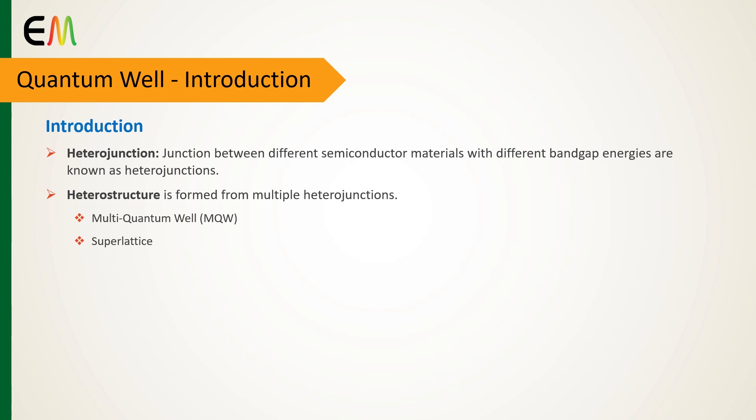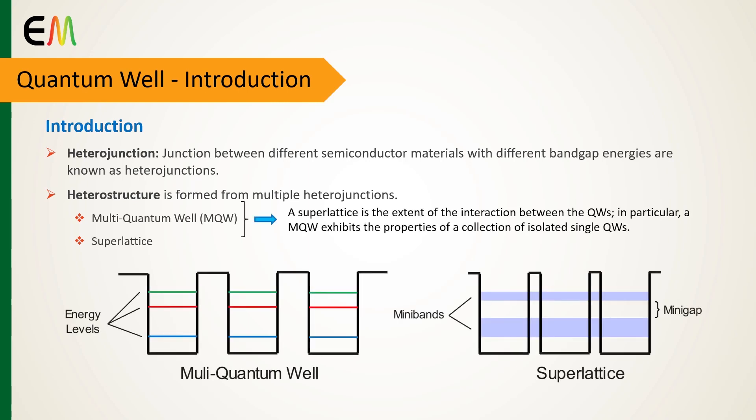A superlattice is formed from a periodic setup of quantum wells like MQW, in which the thickness of the energy barriers separating the individual wells is made sufficiently small.